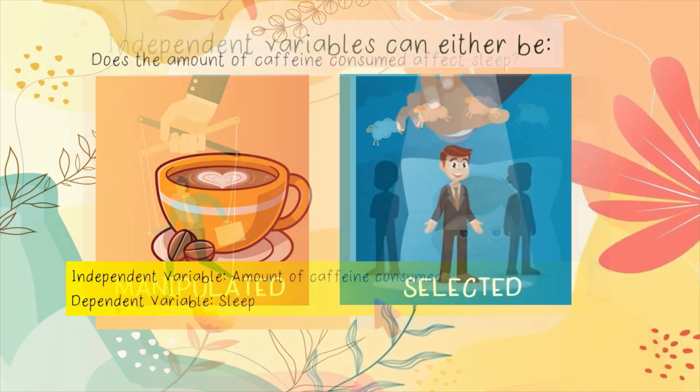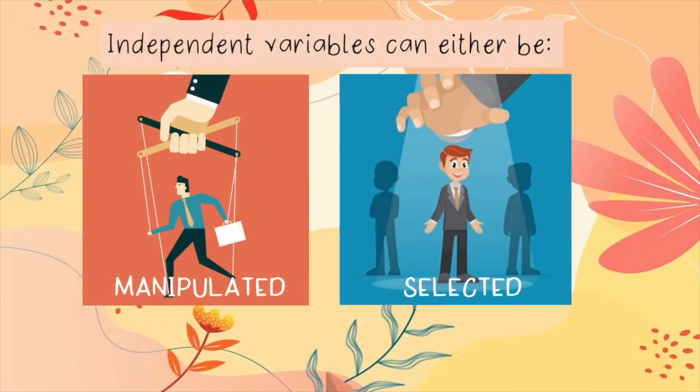Did you know that independent variables may be either manipulated or selected? A manipulated variable is one that the researcher creates — such variables are called manipulated variables or treatment variables. Sometimes researchers select an independent variable that already exists. In this case, the researcher must locate and select examples of it rather than creating it.